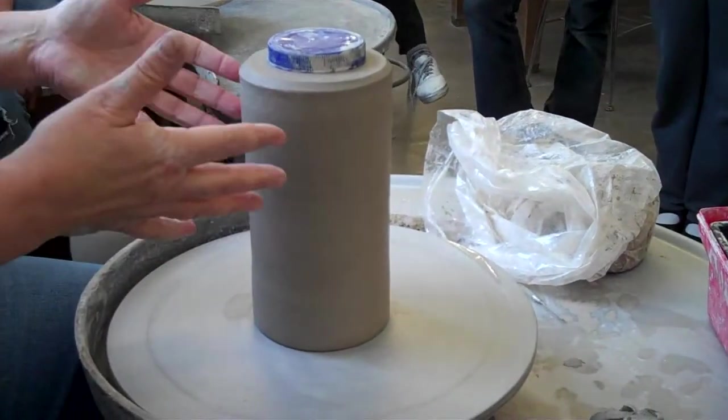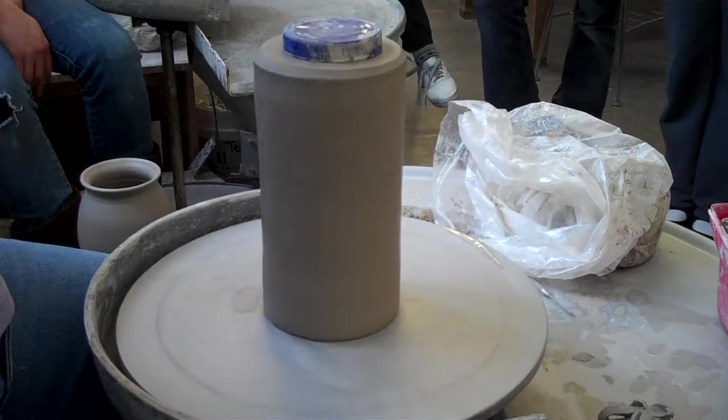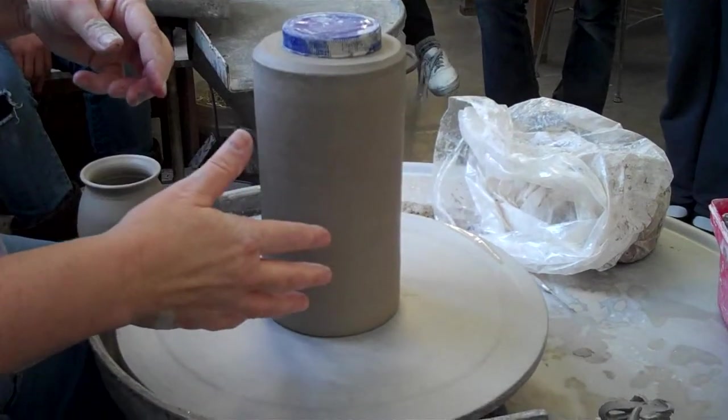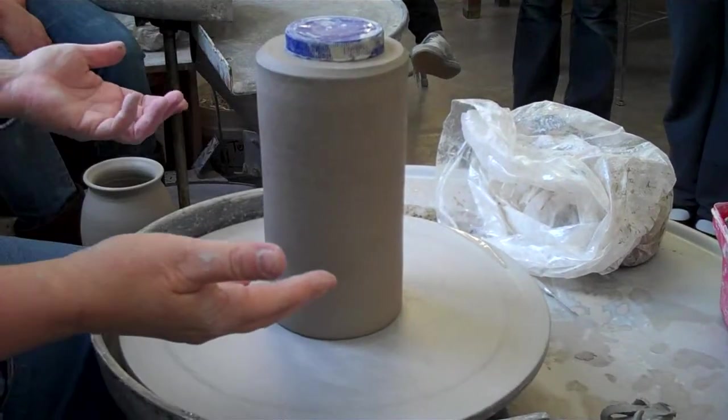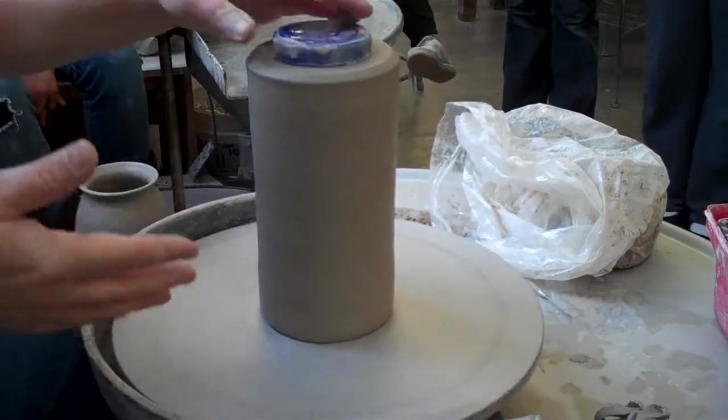But like I said, I don't like to do that partly because it can distort the rim of your pot. And also because as I'm trimming, I like to be able to pick the pot up and hold it and look at it, and then turn it back upside down, recenter it, trim some more. And if it's stuck down with clay, you just don't want to go through all that. And if you don't know how to tap center, so that's why you've got to do both those things.